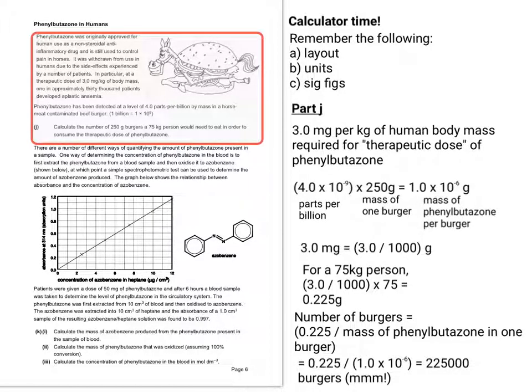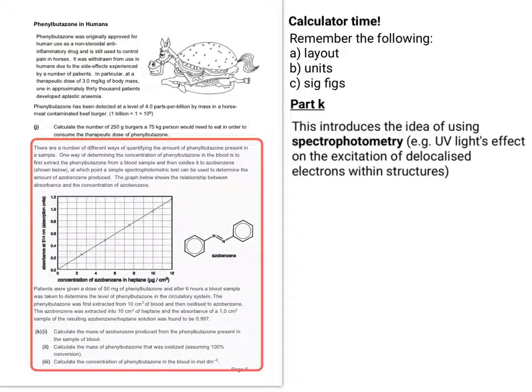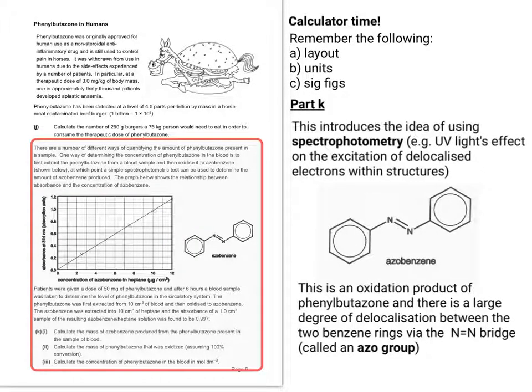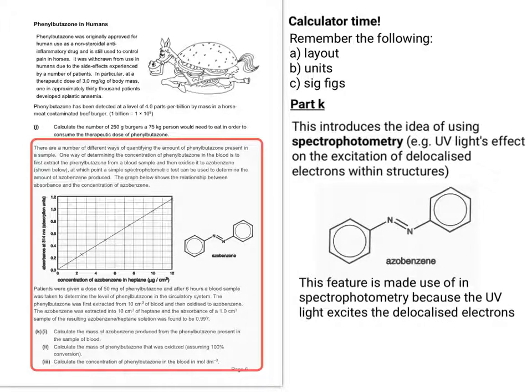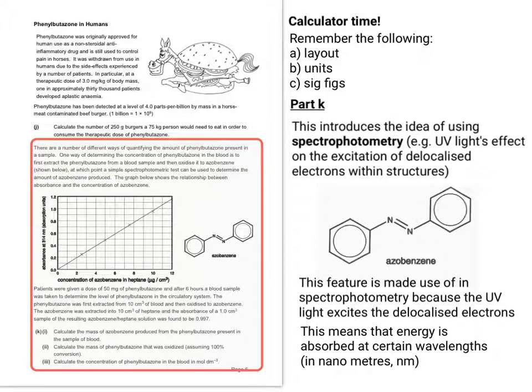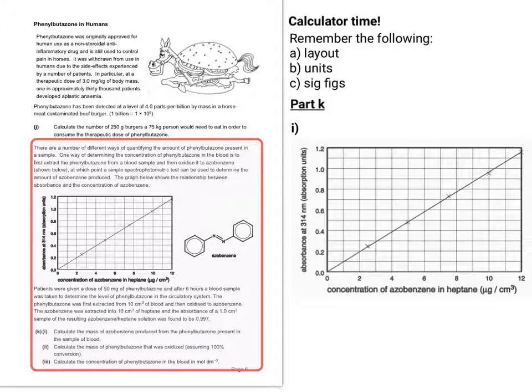Right then, moving on swiftly, on to the next part, part K. So this introduces the idea of using spectrophotometry, and one common type of spectrophotometry is UV light, or UV visible spectrophotometry, where the effect of UV on the excitation of delocalised electrons within structures is explored. So this azobenzene is an oxidation product for phenylbutazone, like it says in the question, and there's a large degree of delocalisation between the two benzene rings via the nitrogen double-bond nitrogen bridge. This is called an azo group. Now, this information you wouldn't have to work out for yourself, but I'm just giving it to you to give a little background. So this feature is made useful in spectrophotometry because the UV light excites the delocalised electrons, meaning that energy can be absorbed in nanometres. This, in turn, allows us to plot a calibration graph, like you can see in the question.